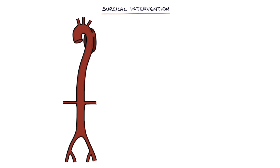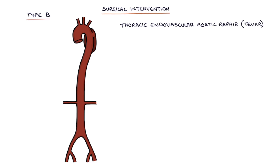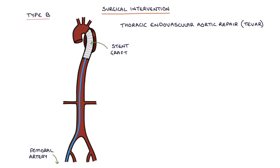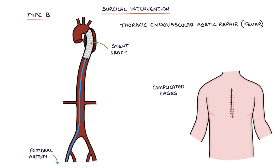A type B dissection, affecting the descending aorta after the left subclavian artery, may be treated with thoracic endovascular aortic repair, or TEVAR. This involves inserting a catheter via the femoral artery and then inserting a stent graft into the affected section of the descending aorta. Complicated cases may require open surgery.